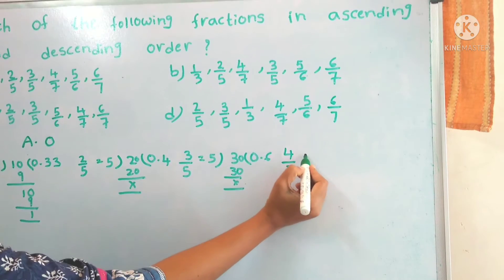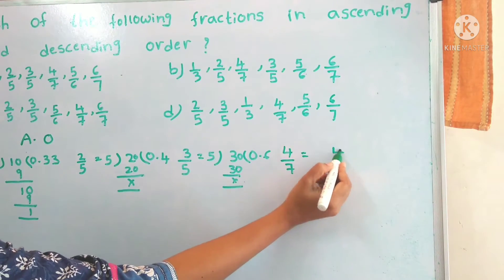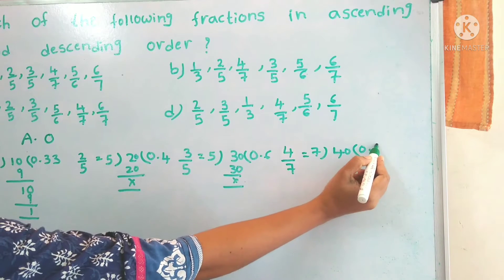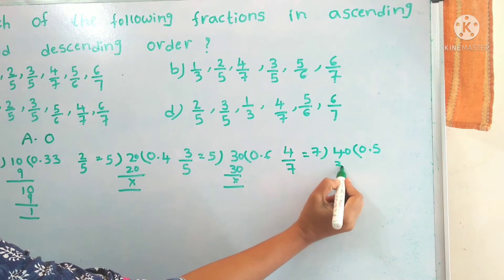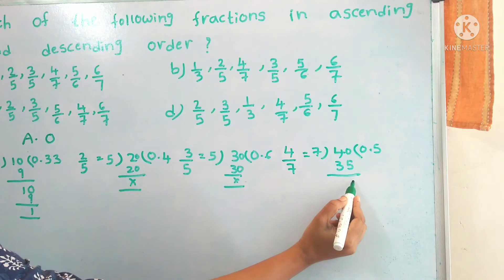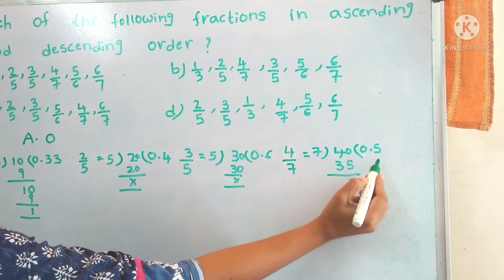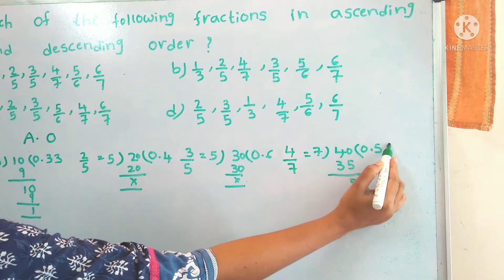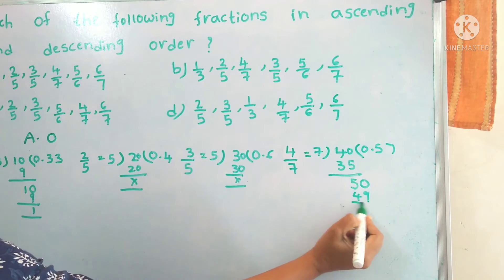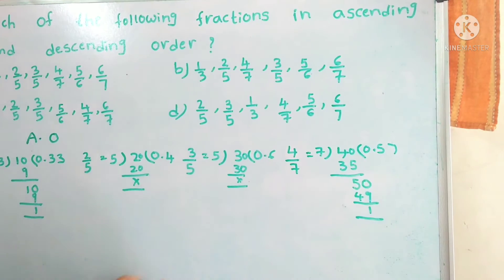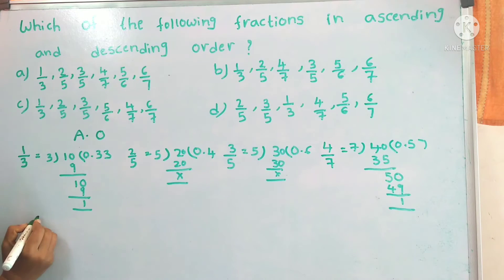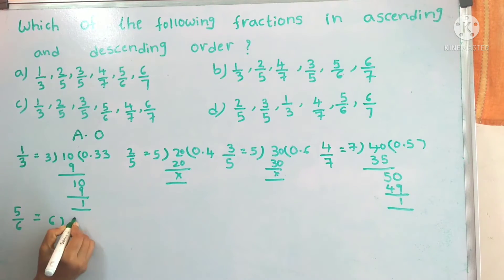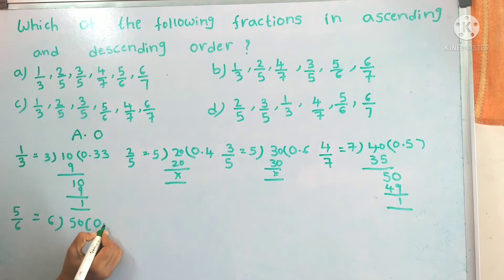Let's take the fourth fraction: 4 by 7. Dividing gives us — 7 into 40 is 35, remainder 5; bring down a zero, 7 into 50 is 49, remainder 1. So 4 by 7 equals approximately 0.571.